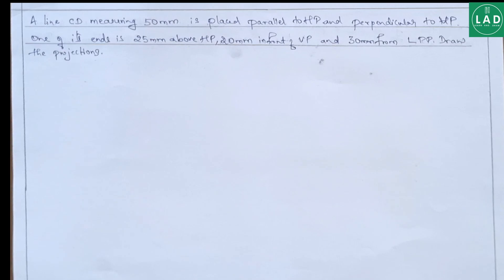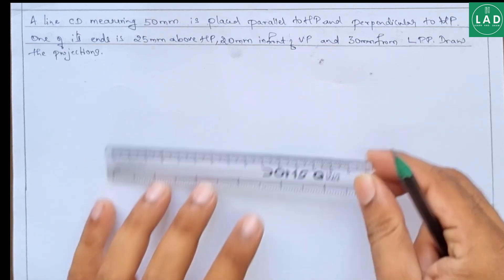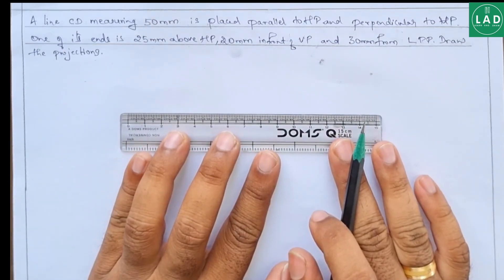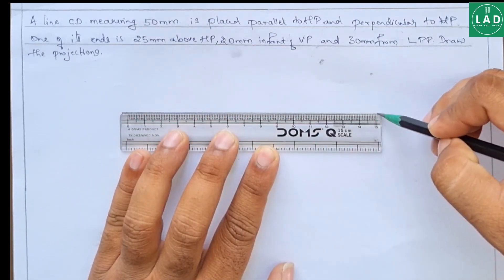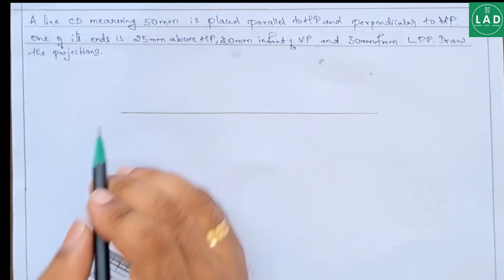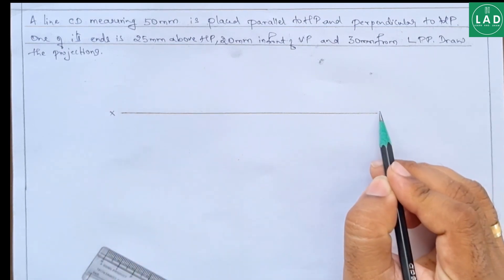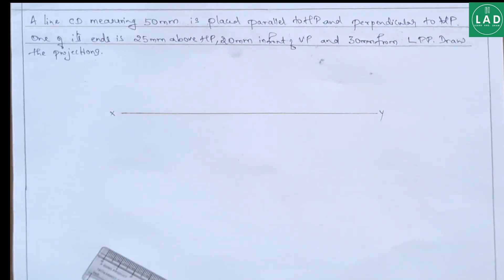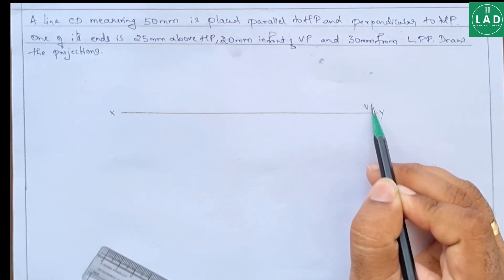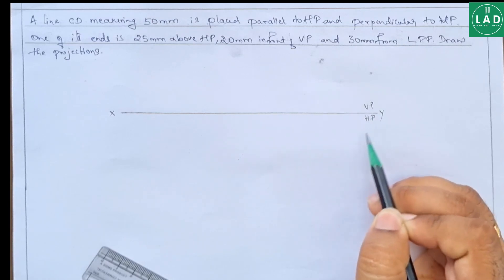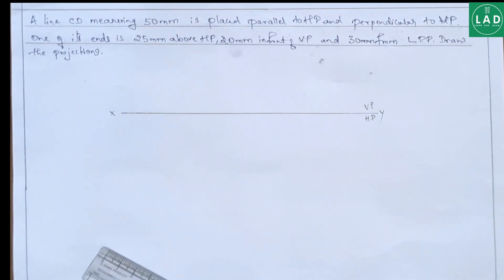Now let us draw an XY line first of any convenient length, and name these points as X and Y. Since we know that we have to draw the left profile plane, let us draw VP and HP here, as we are drawing it in the first angle projection method.